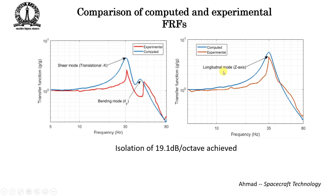For the longitudinal Z-mode — translation up and down along the Z-axis — both the computed and experimentally measured FRFs were obtained. The Z-mode peak occurs slightly above 35 Hz, with experimental results closely matching. The slope of the FRF after resonance is approximately 19.1 dB per octave, which indicates the level of isolation achieved. This is slightly on the lower side; ideally we would like something closer to 30 dB per octave for effective vibration isolation.